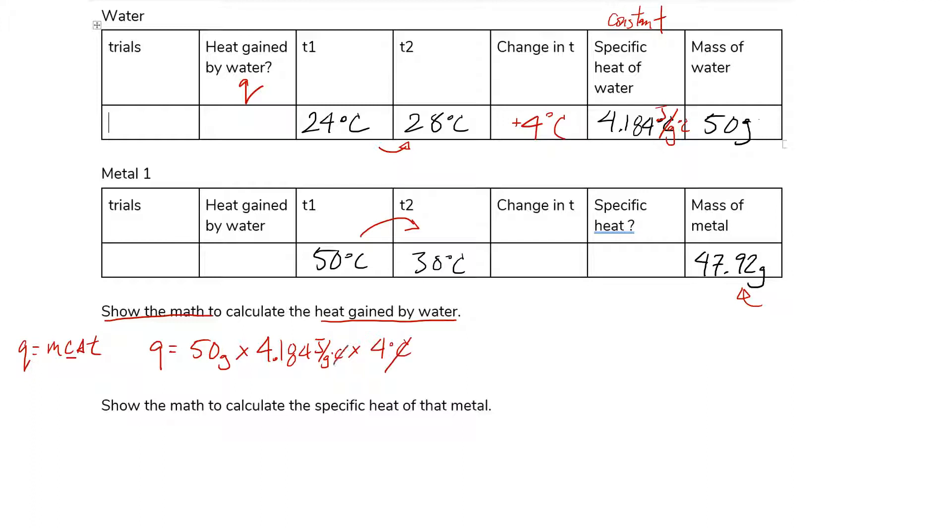Notice how the units cancel. Celsius cancels. Grams cancel. And if I do this math correctly, I just multiply it across, I get 836.8 joules. Great.